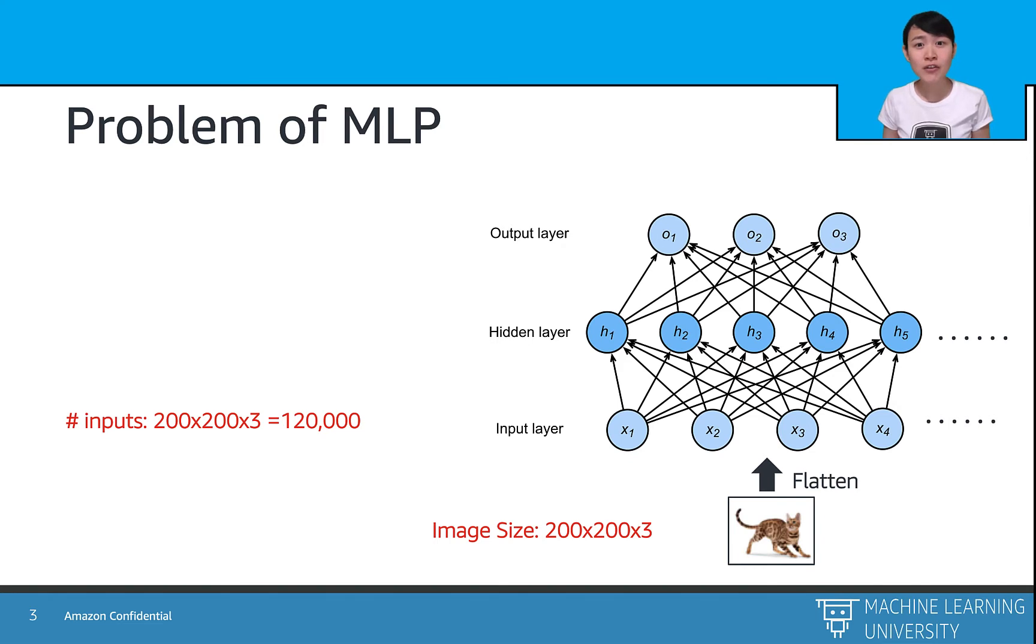For a color image of size 200 by 200 by 3, we will have 120,000 input features. And if we train a single hidden layer MLP with 100 hidden units, there will be 12 million weights to train.